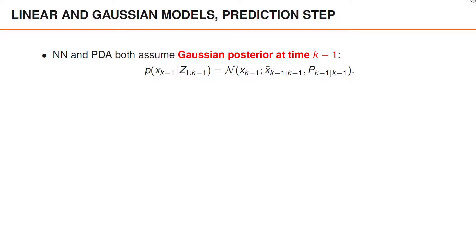Since both nearest neighbor and probabilistic data association end every recursion by approximating the posterior density as Gaussian, we always start the next recursion by assuming that the posterior at the previous time is Gaussian.